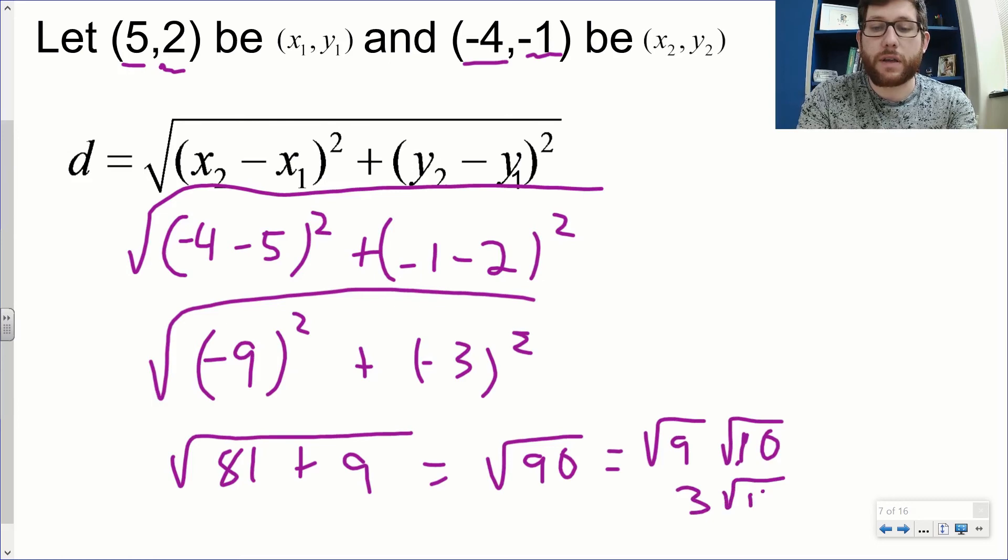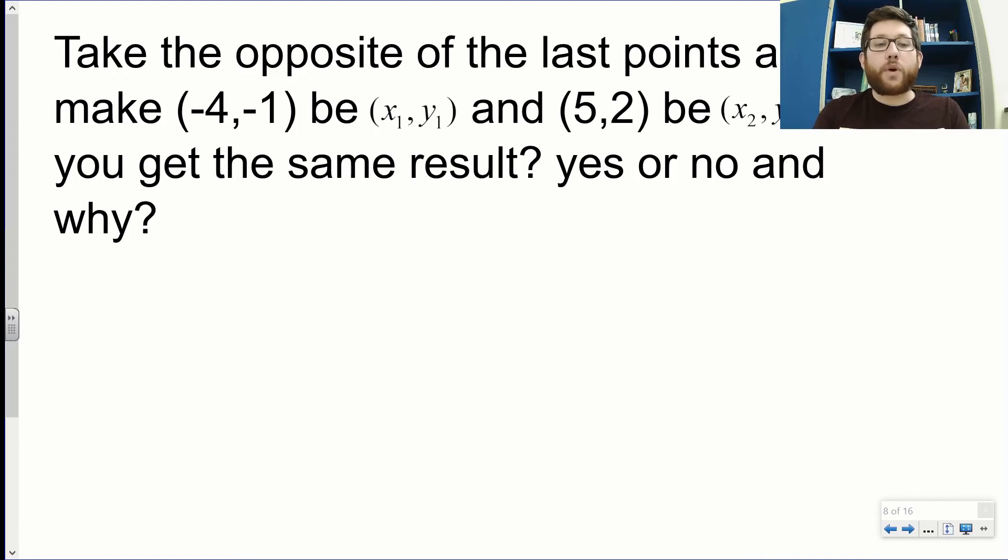What if I swapped them? What if I made (-4,-1) my x₁,y₁ and (5,2) my x₂,y₂? Would I end up with the same answer? Actually I would, because the distance between -4 and 5 is still 9. Even though it's a positive 9 instead of negative 9, when it squares, the negatives go away. Same with -1 and 2. We're checking the distance between my two y values, and that's the same no matter which way I swap them. The square takes care of the negative, so it doesn't matter.